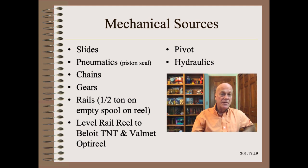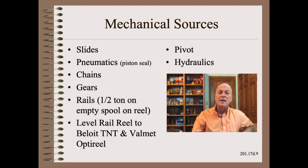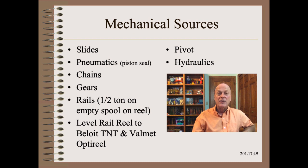Mechanical sources are usually the biggest by far. However, measuring the individual contributions can be quite difficult to set up without changing the very value we are trying to measure. In general, you will find that chains, gears, and slides will have noticeable friction. In general, you will find that pivots and hydraulic components have very little friction. However, as they say, your mileage may vary — so you must measure the components on your specific make and model of machine.